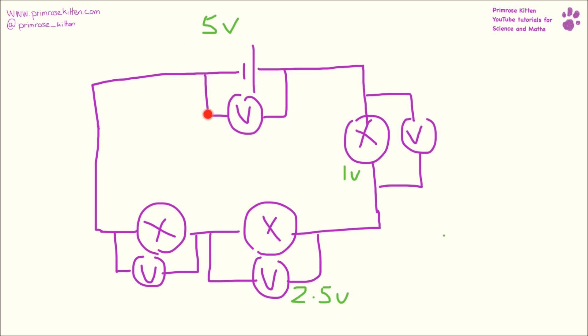Here we have a cell that has a potential difference of five volts across it, a bulb that has a potential difference of one volt, a second bulb that has a potential difference of 2.5 volts. Now we know that all of these things in the series circuit have to add up to equal the potential difference across the battery.